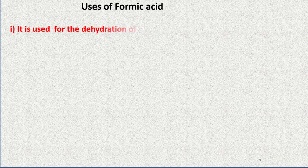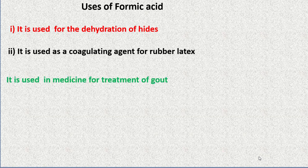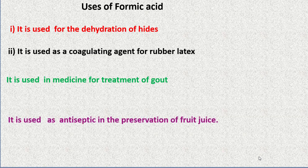First, uses of formic acid. It is used for the coagulation of rubber latex. It is used in medicine for the treatment of gout. It is used as an antiseptic in the preservation of fruit juice.